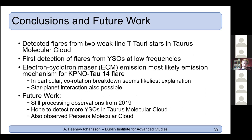In conclusion, Anton reports the first detection of flaring radio emission from YSOs at low frequencies — from two T-Tauri stars — with ECM emission as the most likely mechanism. Future work includes analyzing remaining 2019 LOFAR observations of Taurus and new observations of the Perseus molecular cloud, another nearby star-forming region.